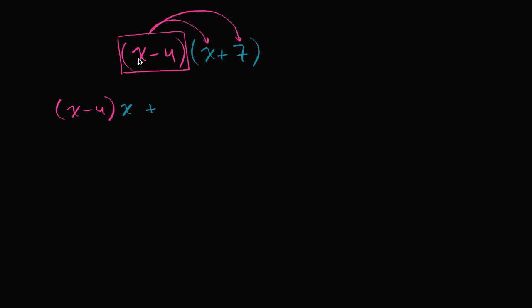we're also distributing the x minus four. We have to distribute it on every one of these terms. So it's also, so plus x minus four, x minus four times this seven. Times the seven.